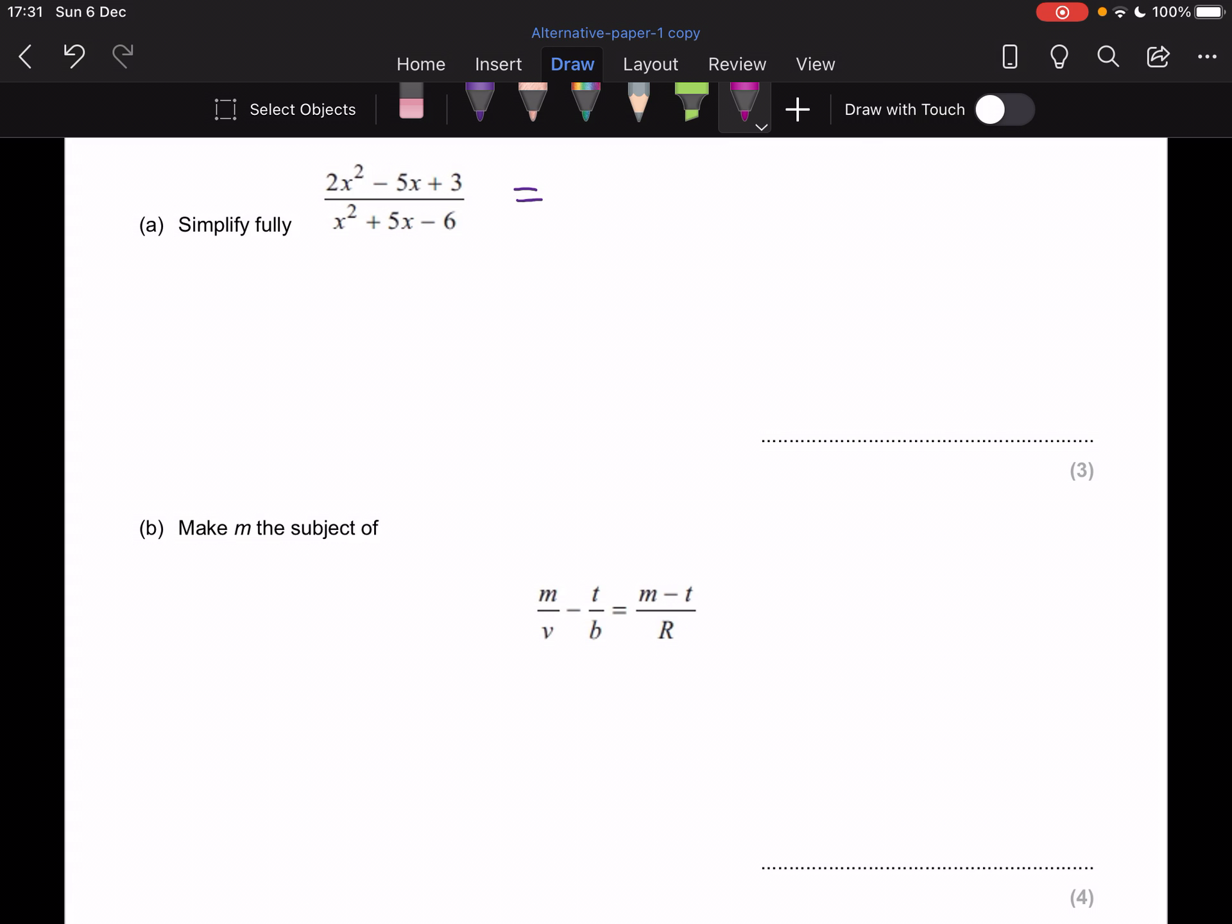So let's make a start. For the numerator, hopefully you guys remember we have to do 2 times 3 first, so A times C, and that's 6. So two numbers that multiply to give us 6 and add to give us minus 5. I'm thinking of minus 2 and minus 3. So then I rewrite this as 2x² minus 2x minus 3x plus 3.